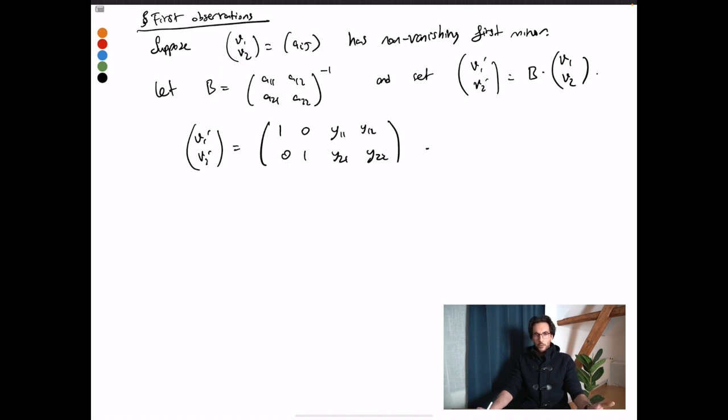This is a natural way to put a space structure on the Grassmannians. So I've more or less defined it as a set, but here I seem to have these affine charts. Thus, the Grassmannian looks locally like these A^4's.